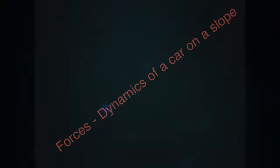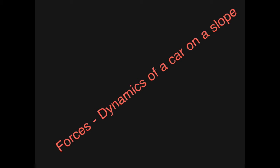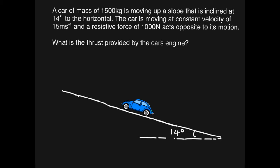Hello everyone, welcome to Green Academy. Today we're going to look at the forces and dynamics of a car on a slope. The question reads: a car of mass 1500 kilograms is moving up a slope that is inclined at 14 degrees to the horizontal. The car is moving at constant velocity of 15 meters per second and has a resistive force of 1000 Newton acting opposite to its motion.